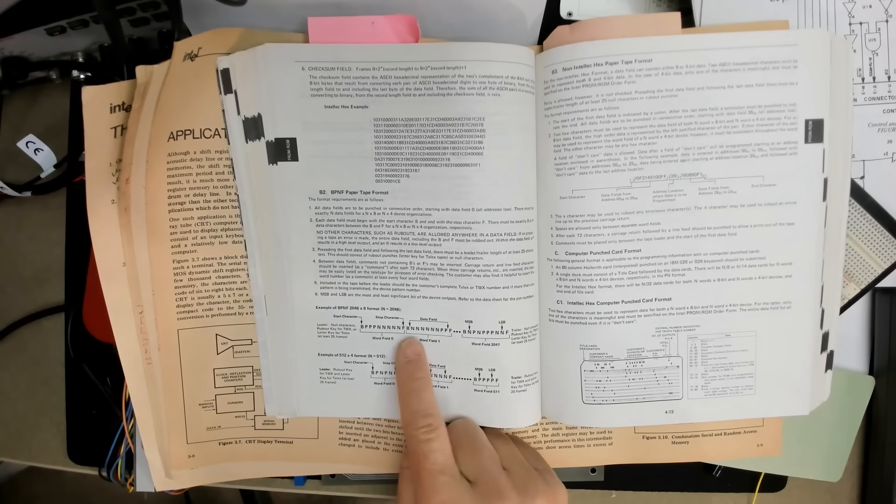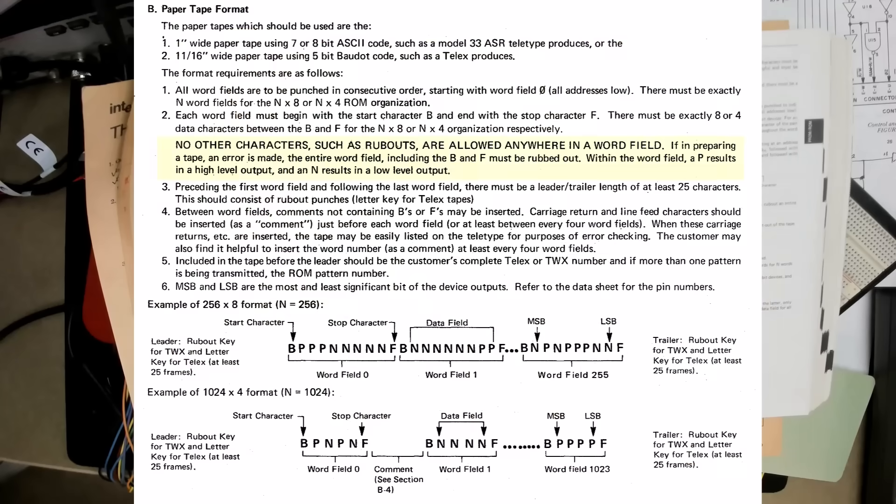Now, within a word field, there could be no characters between the B and the F other than either the 4 or 8 P's or N's. Now, there were two exceptions to this P and N rule that I'll mention in a minute.